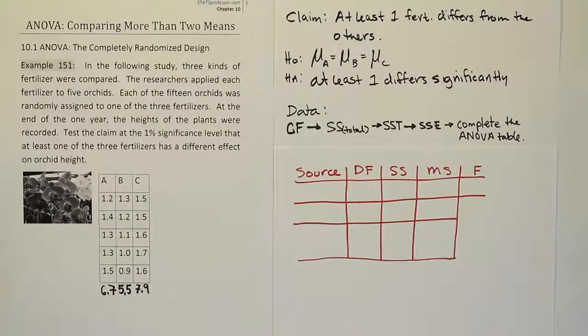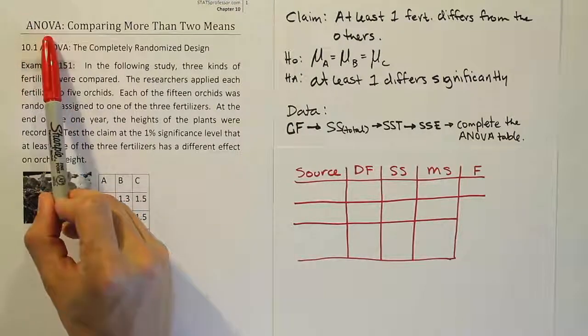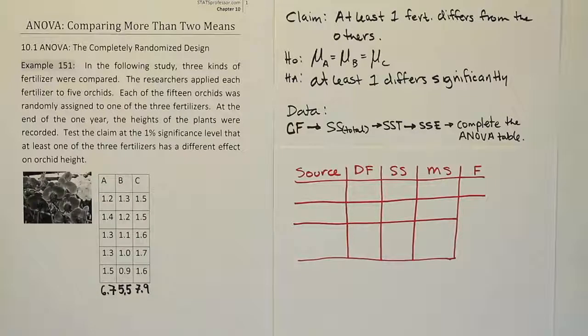Alright, so let's talk about what goes in the source column. Remember, this is ANOVA, in other words, analysis of variance. So what we're talking about here is, when you're doing this ANOVA procedure, is to think about what is the source of the variance.